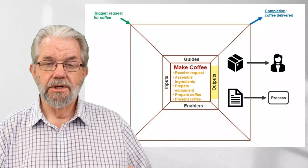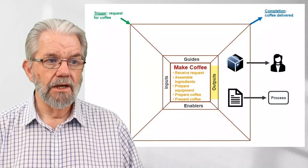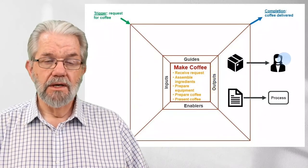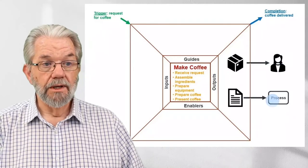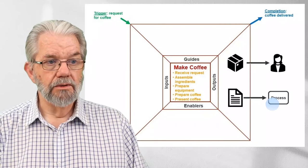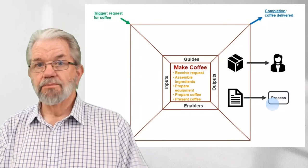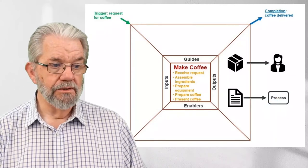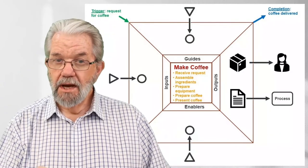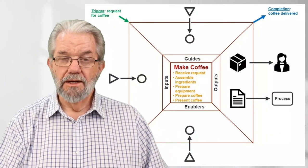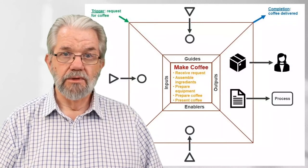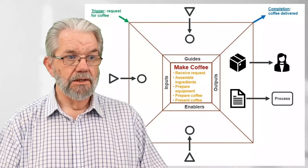For each of the four elements — inputs, outputs, guides, and enablers — we identify what they are, name them, and importantly say where they go to or come from. They'll go to or come from either a person or stakeholder, or another one of our processes — shown with round corners in the diagram. Not surprisingly, an important output is a cup of coffee going to whoever requested it. But there are other outputs: dirty utensils going to the dishwasher, usage data going to a process called 'Procure Supplies,' and waste data going to a process called 'Reuse Waste.' This starts to build a much deeper map and understanding.